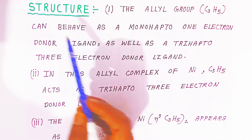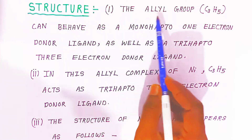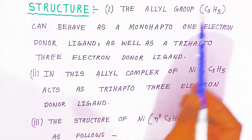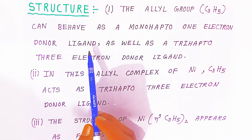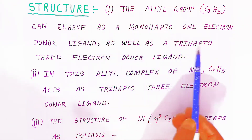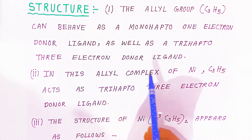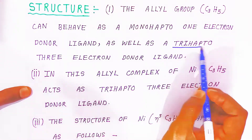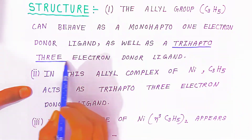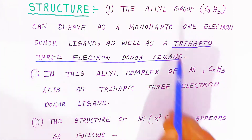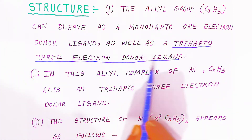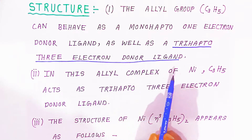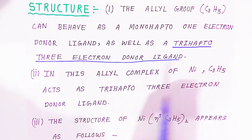When looking at the structure, the allyl group C₃H₅ can behave as a monohapto one-electron donor ligand as well as a trihapto three-electron donor ligand. In this allyl nickel complex, the allyl group behaves as a trihapto three-electron donor ligand.